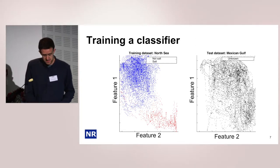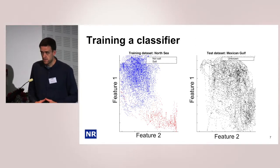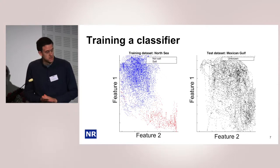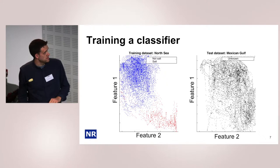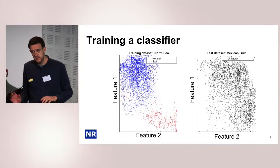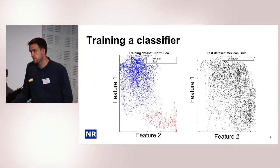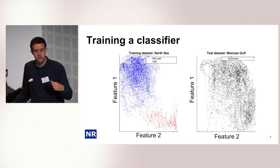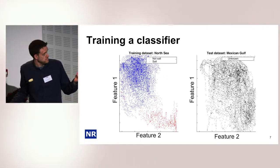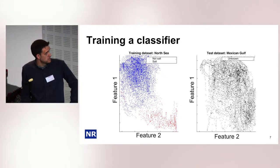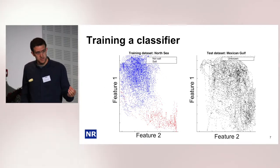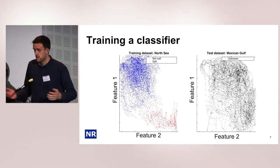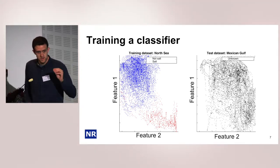The standard way would be to compute some features and then apply a classifier. If we look at the image, the pixel values don't give us much information about what is or isn't a salt body. The amplitudes range from, let's say, minus 1 to 1, and there is no information in just one pixel.